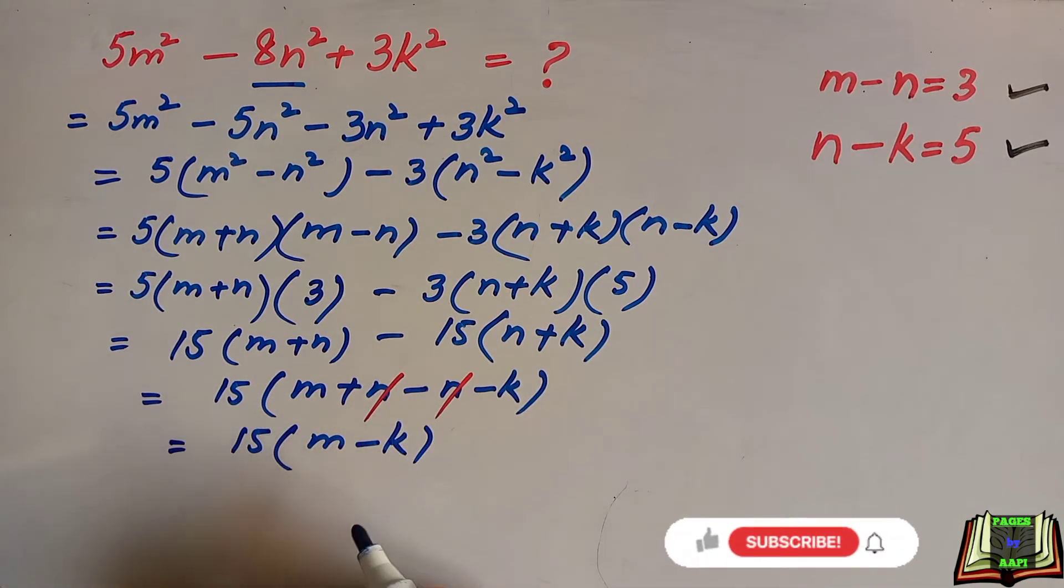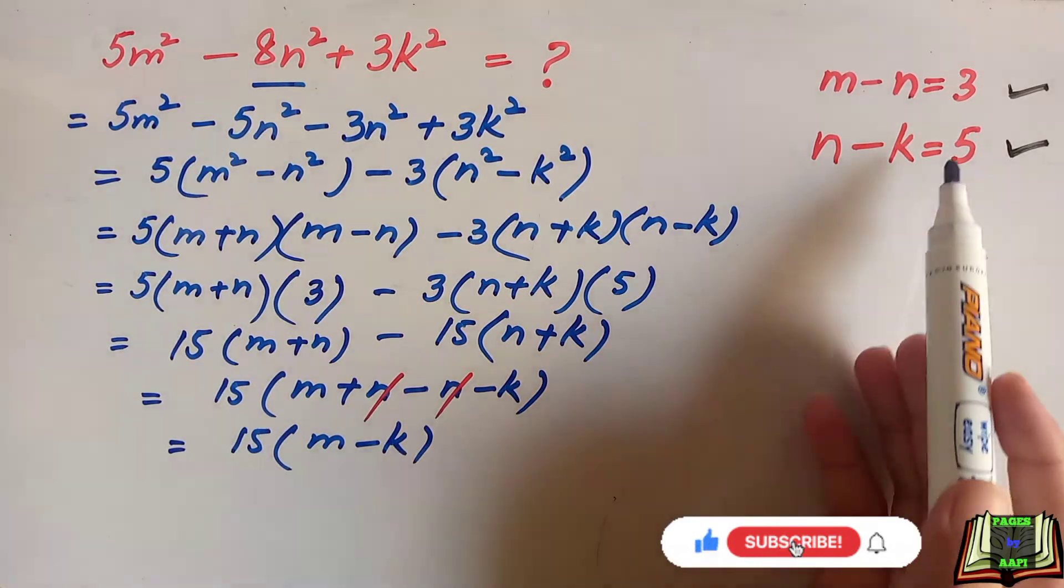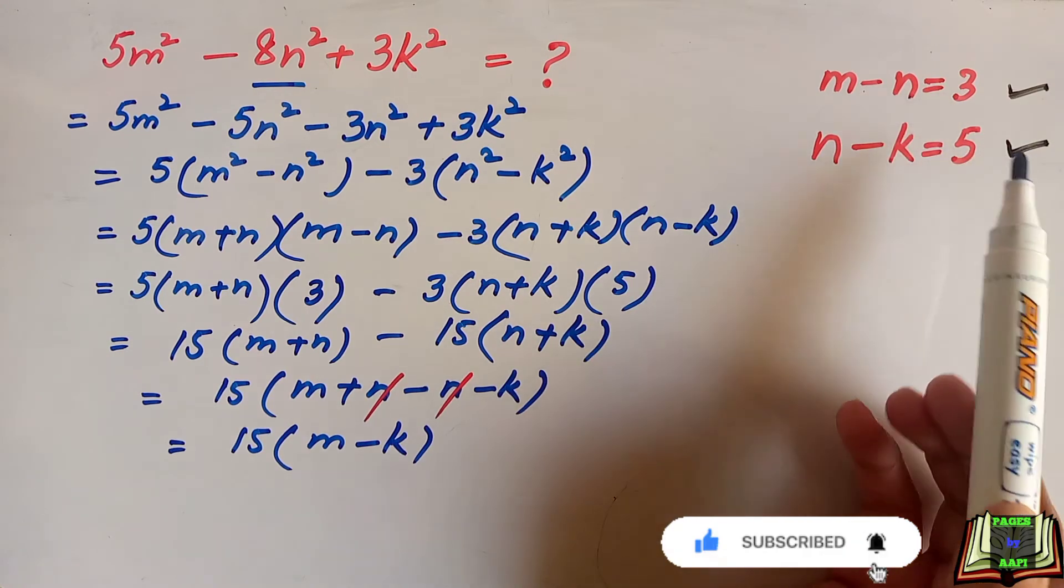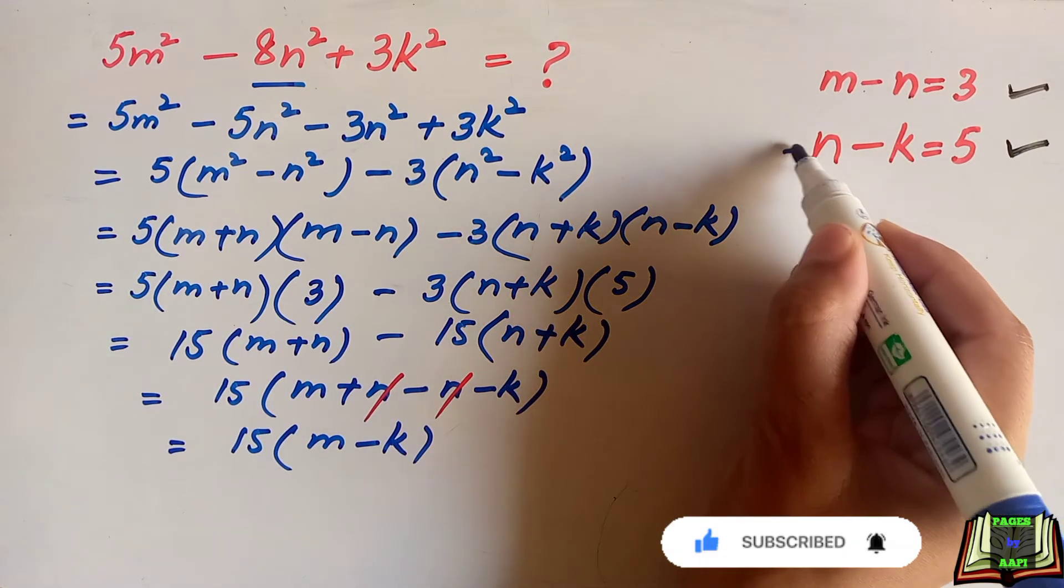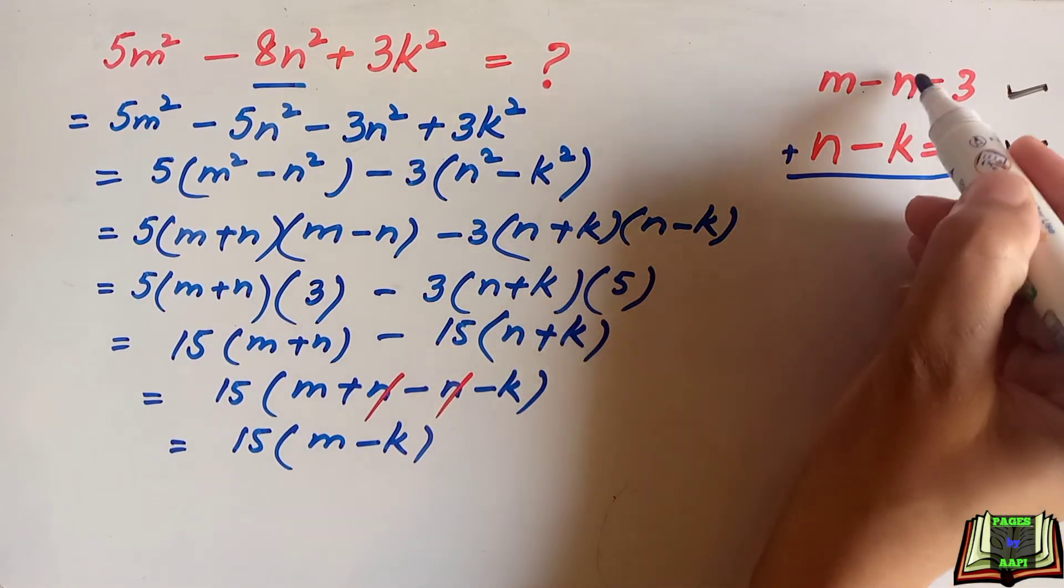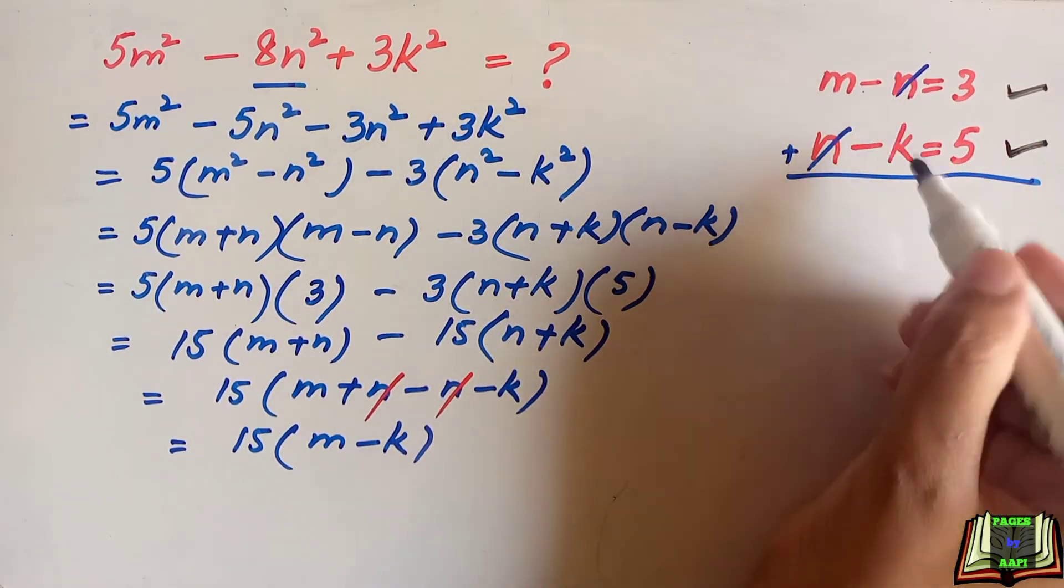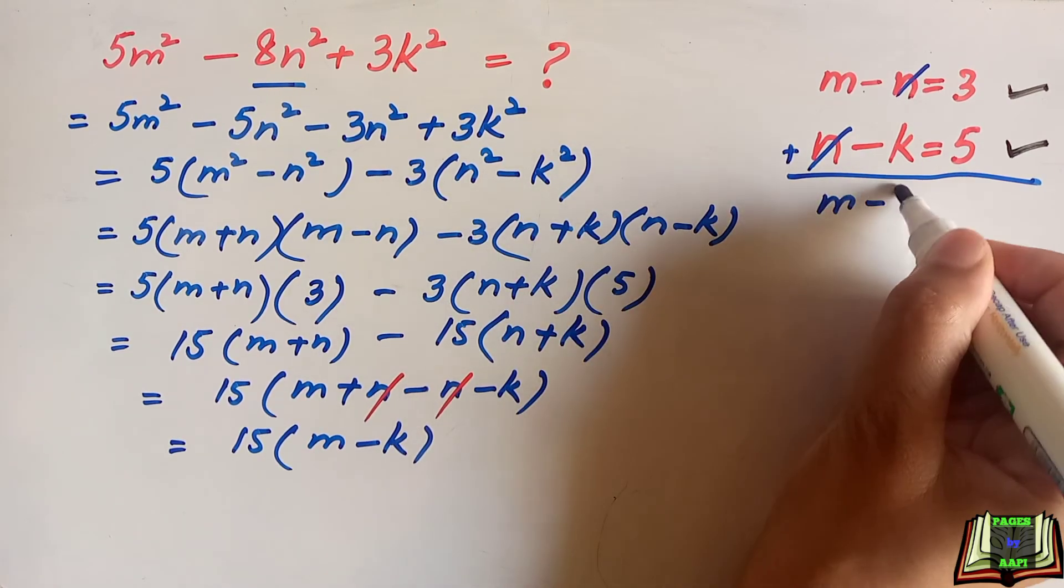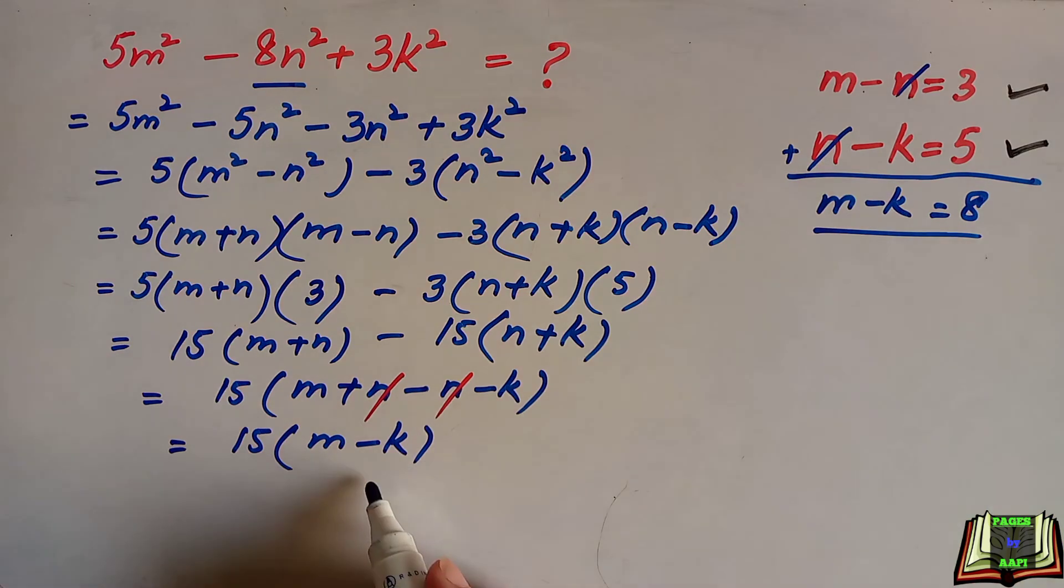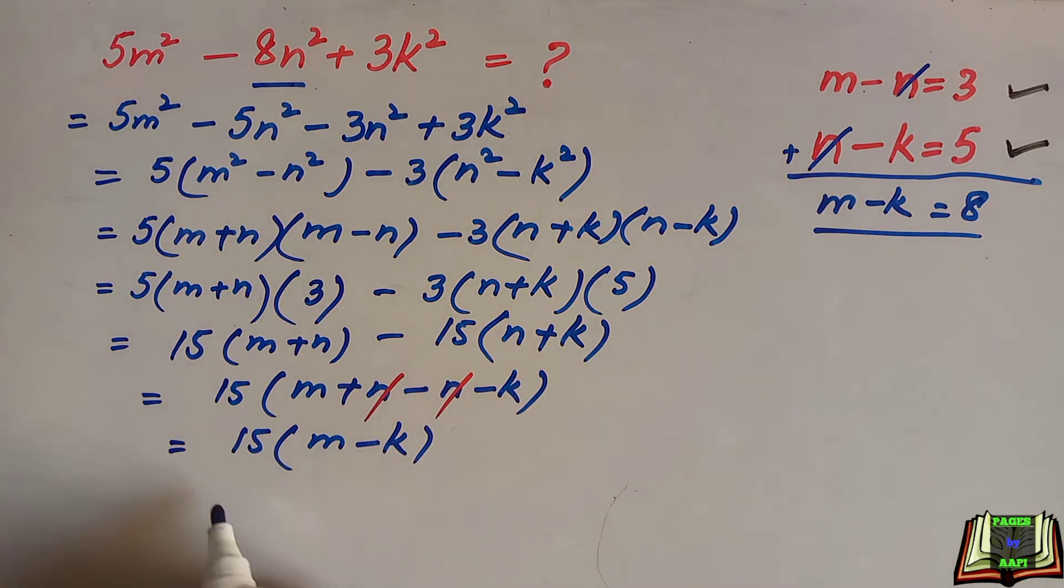We just have the value of m - n and n - k, but we need the value of m - k. So let's add these two equations. If we add these two equations, n and n will cancel out. We are left with m - k = 3 + 5 = 8. See, we have the value of m - k which is equal to 8. Let's substitute it.